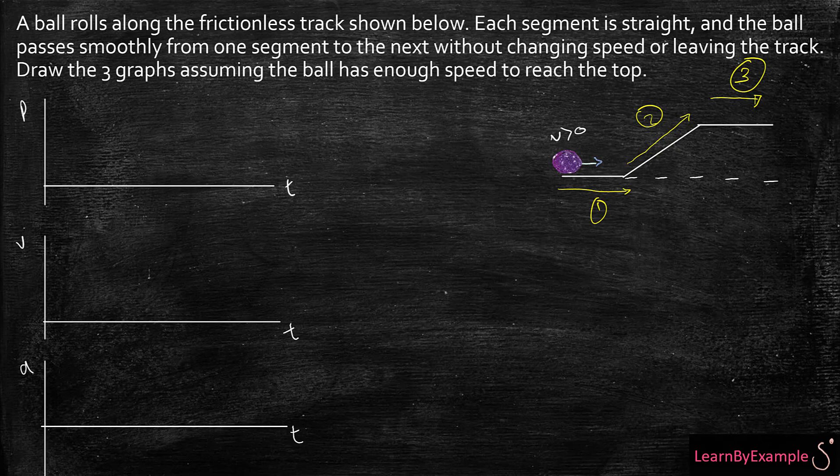So for the first part, I'm going to have a constant velocity, and that means my position is changing with time at a constant rate. Since my position is going, if this is my zero position, my position is increasing at a constant rate, meaning I will have a straight line with a positive slope.